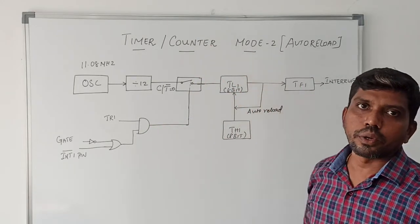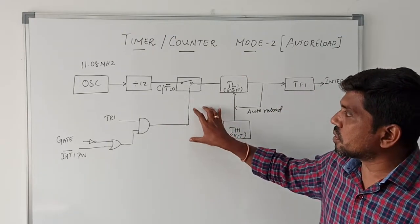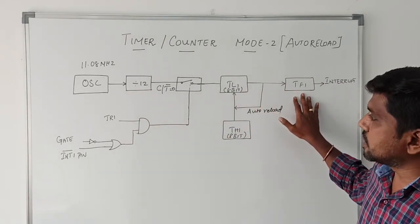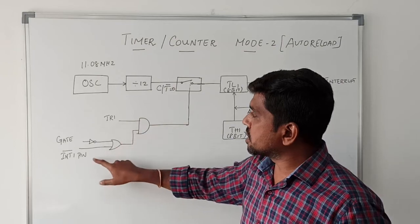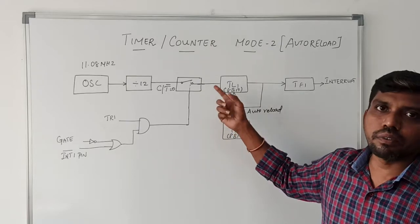So this Mode 2 operation is otherwise called as auto reload mode. It's a schematic diagram. In this diagram it consists of oscillator cycle, frequency divider, timer register, timer flag register, and three control signals used to trigger the timer register by hardware or software.